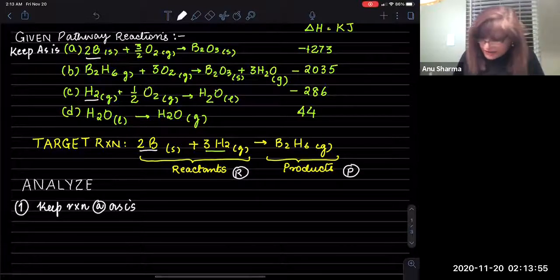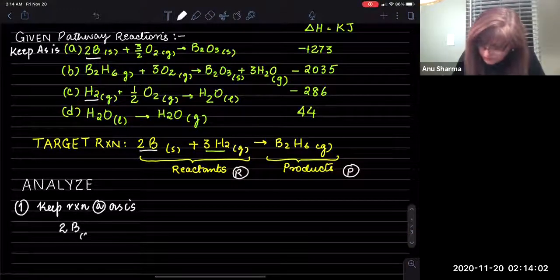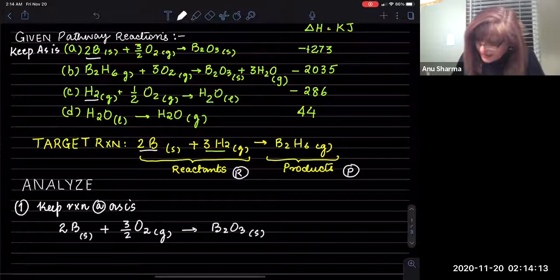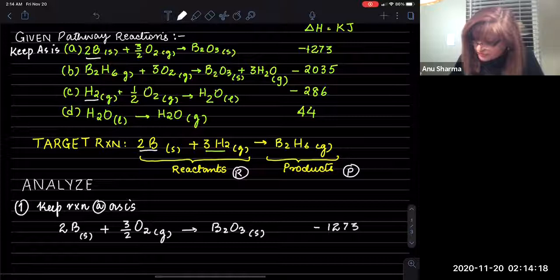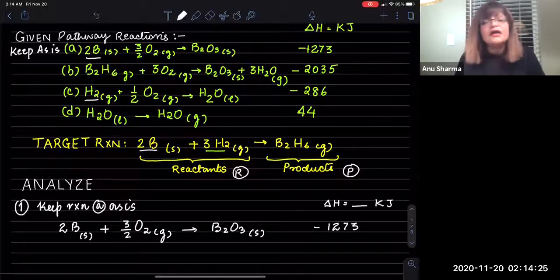Step one: keep reaction A as is, just bring it down as it is. Two moles of boron in the form of a solid reacting with 3/2 moles of O₂ as a gas, giving you B₂O₃ as a solid. The value of delta H is negative 1273 kilojoules. Delta H values for the rest of the reactions are also going to be in kilojoules.